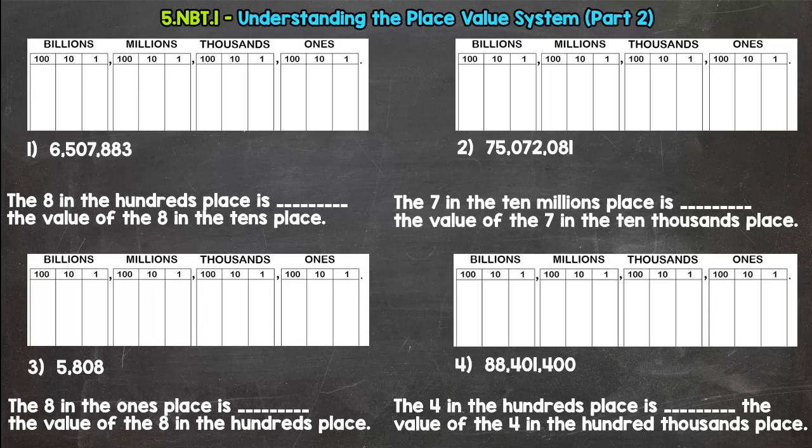And we're going to take a look at the relationship between different places within our place value system. And I have 4 numbers here with a place value chart aligned with all 4 and then a fill-in-the-blank question that goes with each. So we're going to hop into number 1 here.